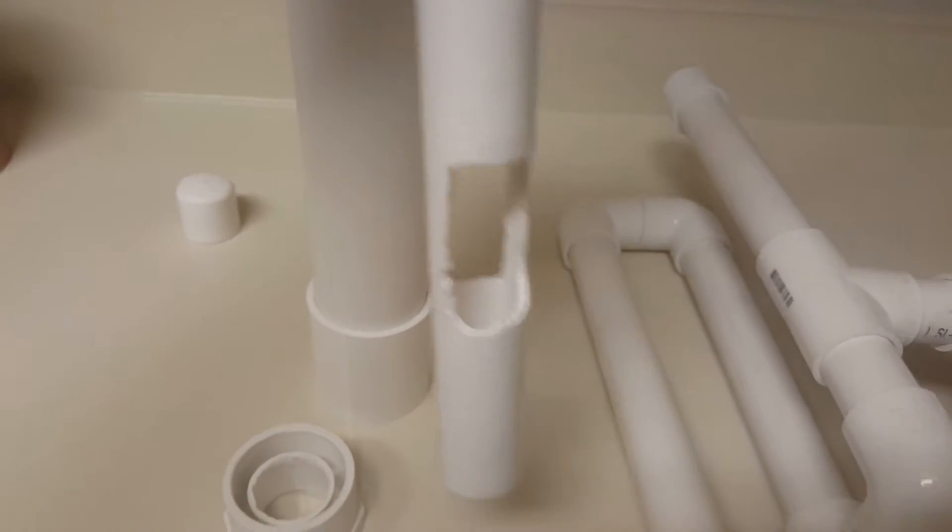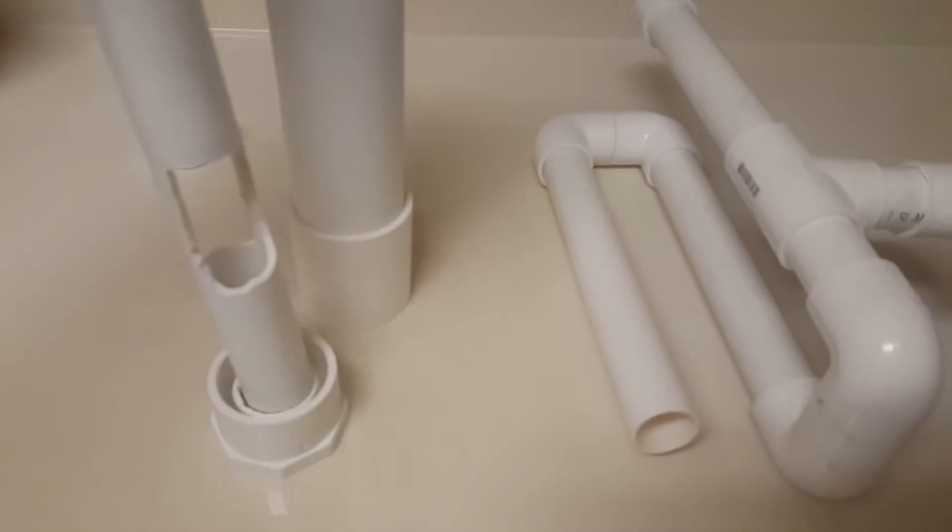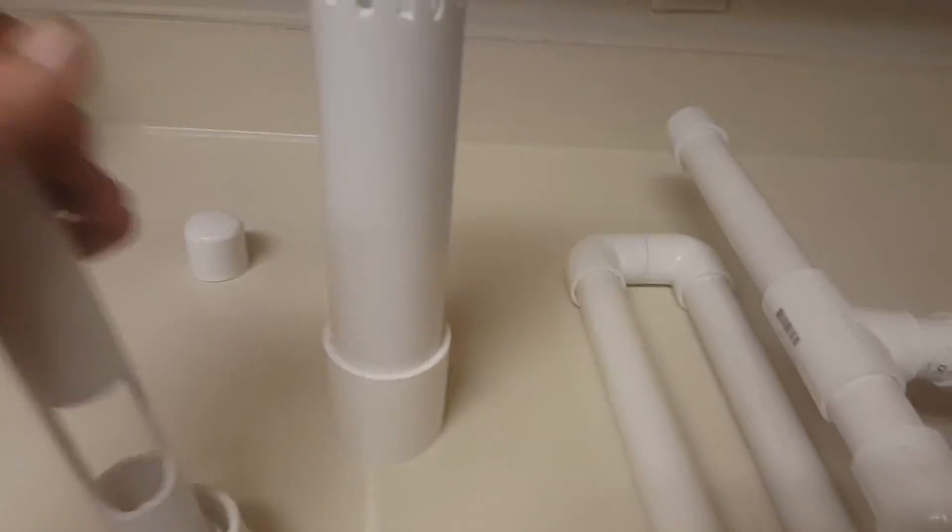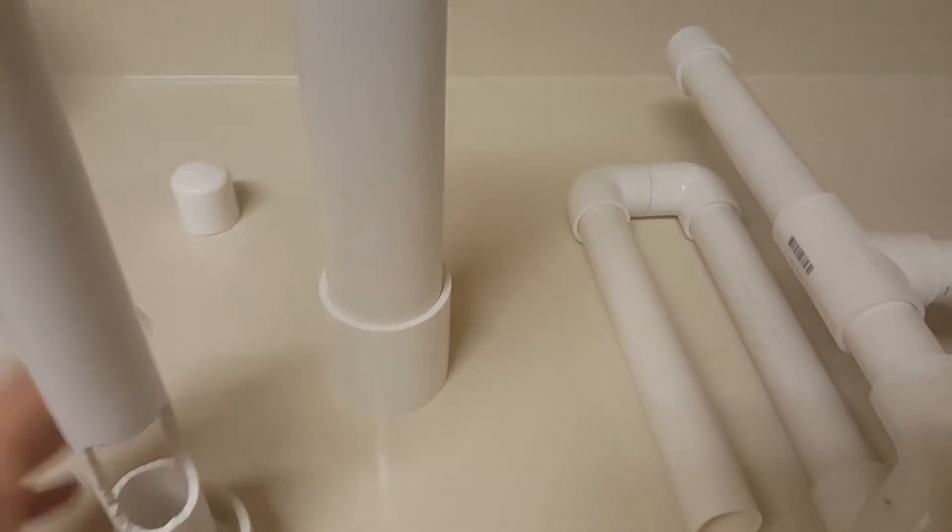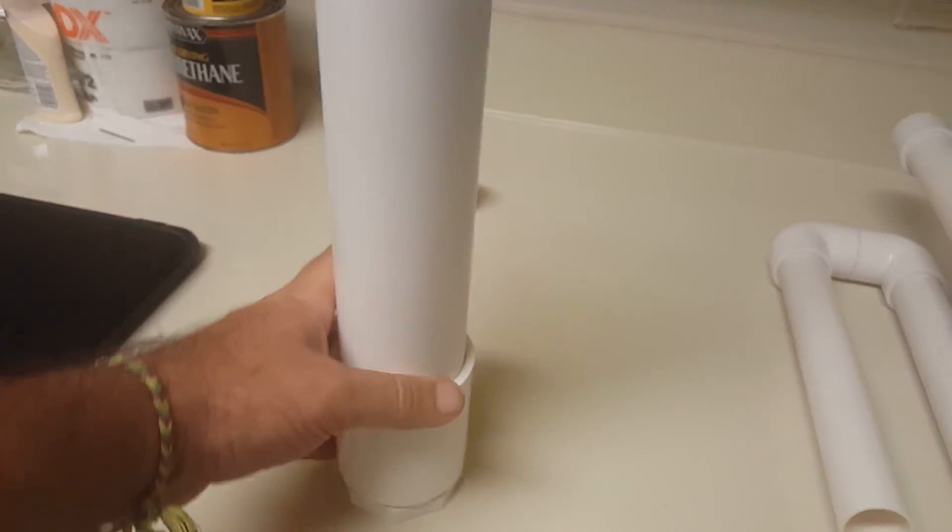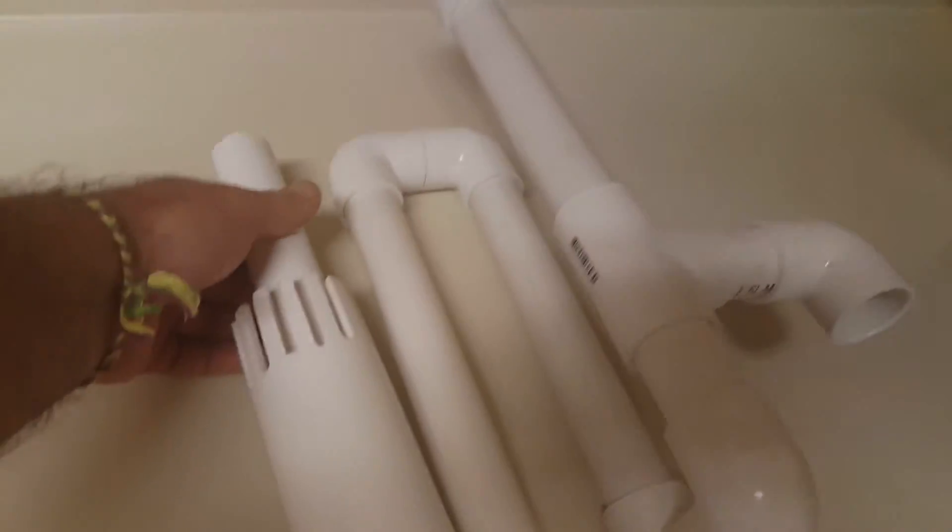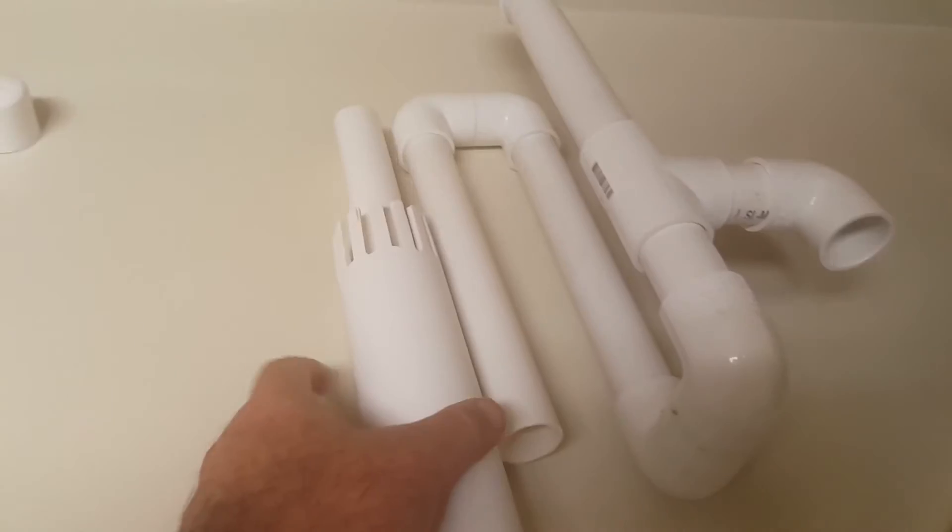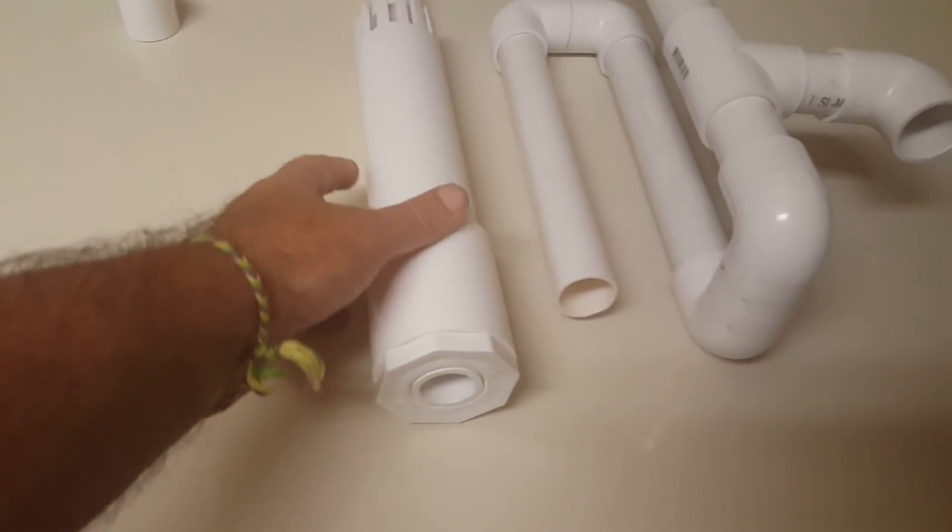I'm gonna pass this through there, which again, tough to do one-handed. Then this whole assembly slips onto here, and now it's locked in place onto this overflow tube. So now it cannot slide up and down, won't need suction cups.